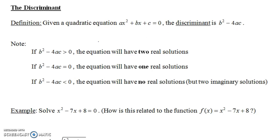The significance of the discriminant has to do with this theorem: if the discriminant is positive, then this equation will have two real solutions. If the discriminant is equal to 0, the equation will have one real solution. And if the discriminant is negative, it won't have any real solutions, but it will have two complex solutions that aren't real.